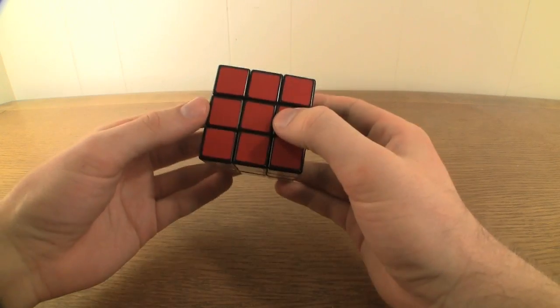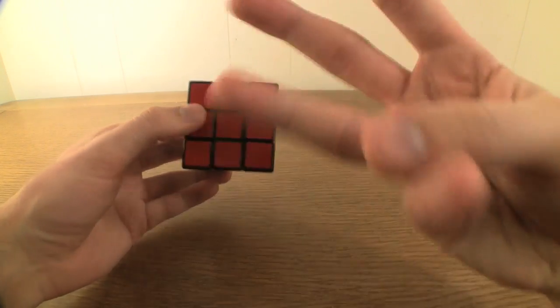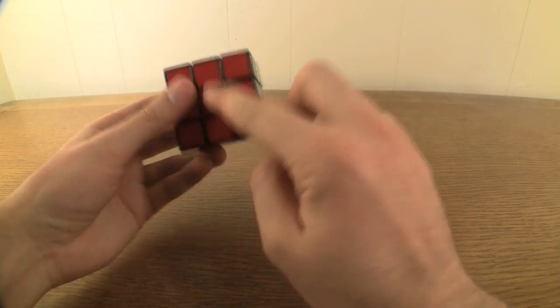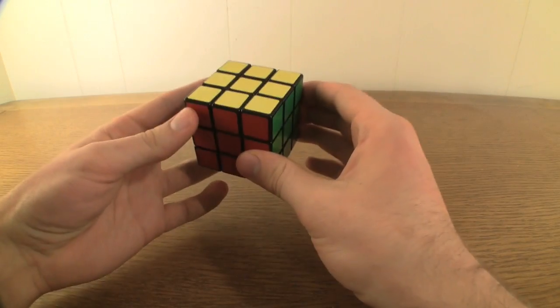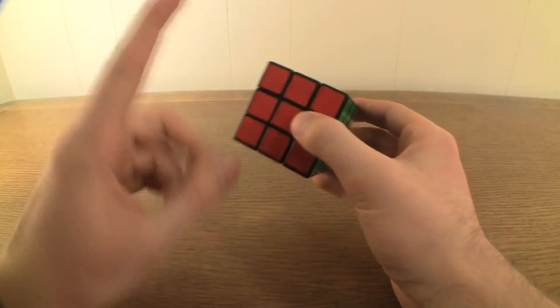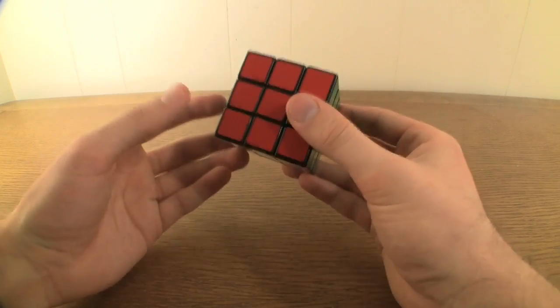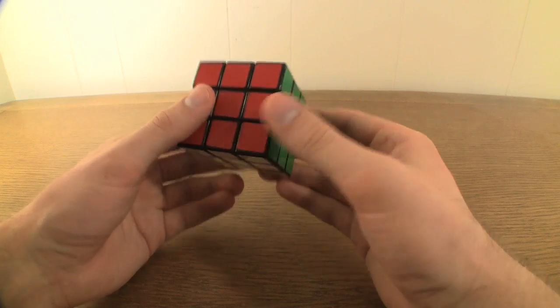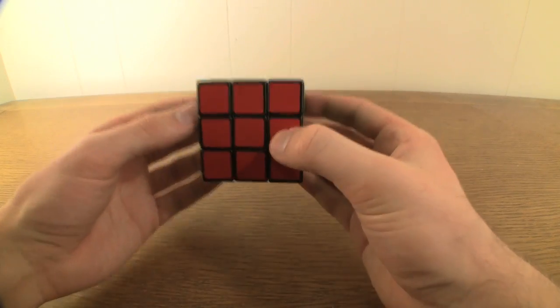The 3x3x3 Rubik's Cube is made up of 26 different cubelets that come in three different types. There are six center cubelets, one in the middle of each side. Centers each have only one color and relative to one another, never move. Therefore, whatever color a given center is, is the same color that its side eventually needs to become.